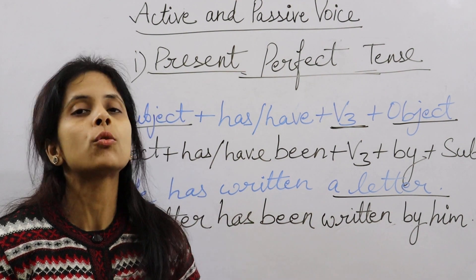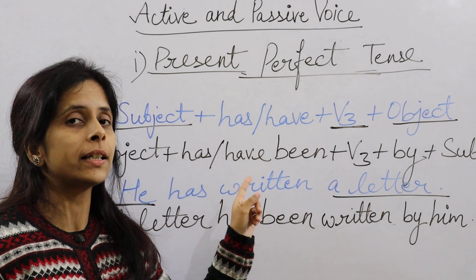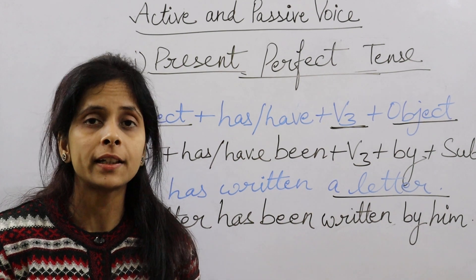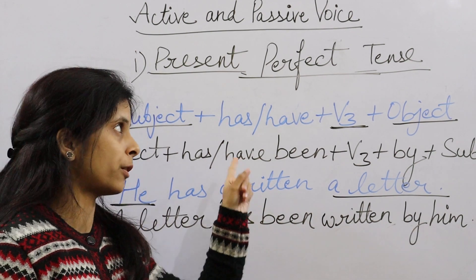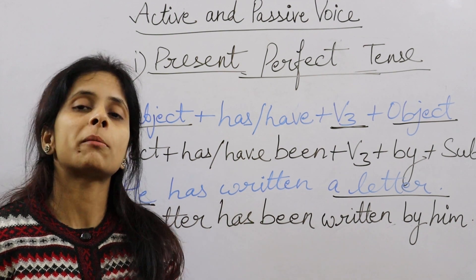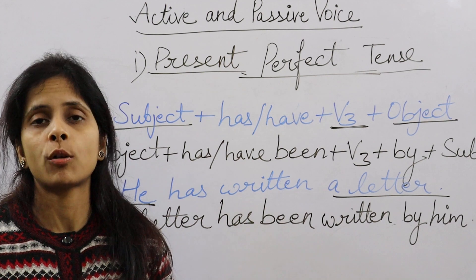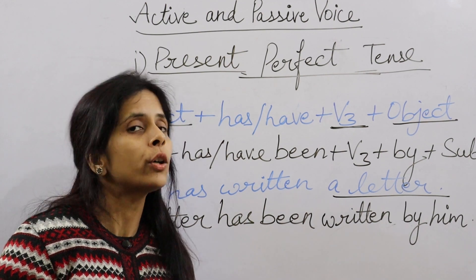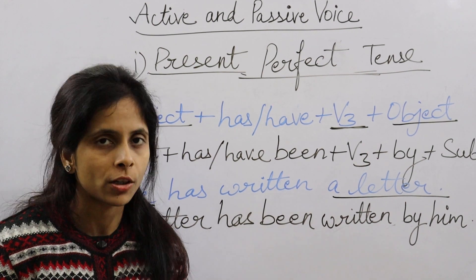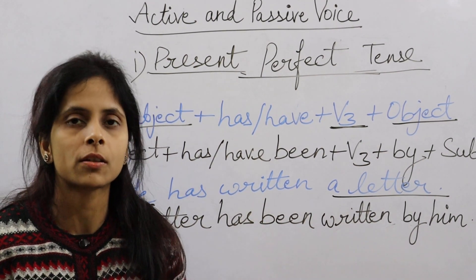Present Perfect Continuous Tense का कोई Passive Voice नहीं बनता। तो Present Tense के तीन tenses — Present Indefinite, Present Continuous, और Present Perfect — इन्हीं का Passive Voice बनता है। Next video में Past Tense के rules, formulas और examples upload करूँगी। अगर आपको आज का video पसंद आया हो तो please like, share और subscribe जरूर करें। Channel का नाम है Universal Judy — Thank you so much!